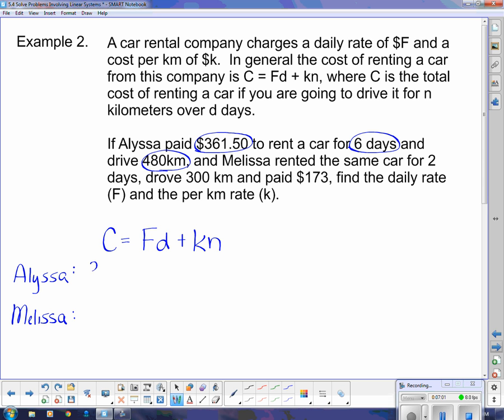Now, that $361.50 is a cost. That F is what we're trying to find. See, look here. It says find the daily rate F and the per kilometer rate K. So we're going to put, we still need that F in there. And then the D is how many days she was there, so that's six. Plus K is the per kilometer rate and N is the number of kilometers. So we have 480 kilometers from right there.